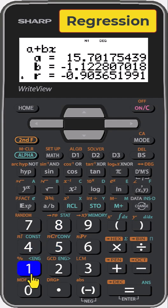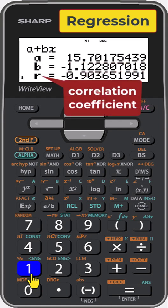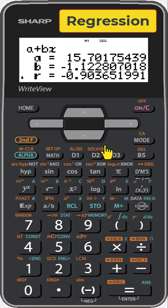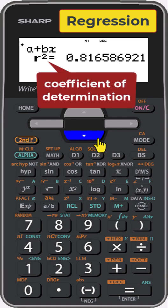And here are the regression coefficients. A is the y-intercept, B is the slope, R is the correlation coefficient, and if you scroll down you'll also see the coefficient of determination, R squared.